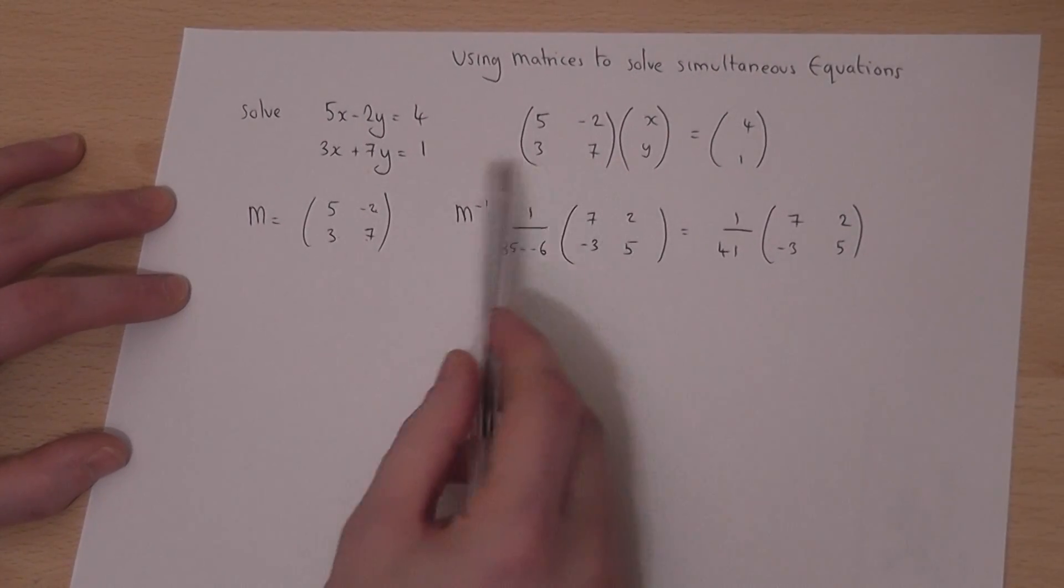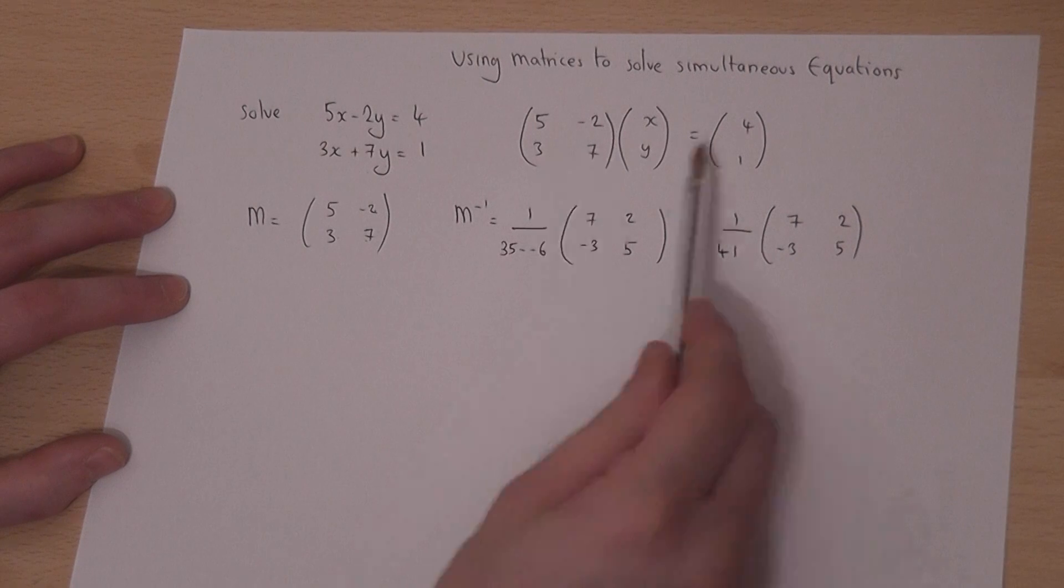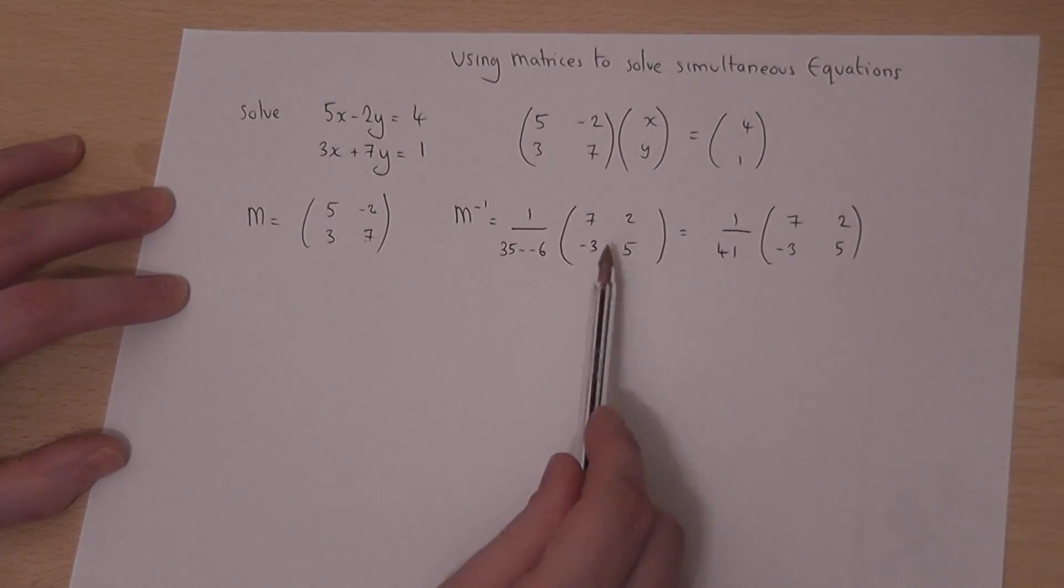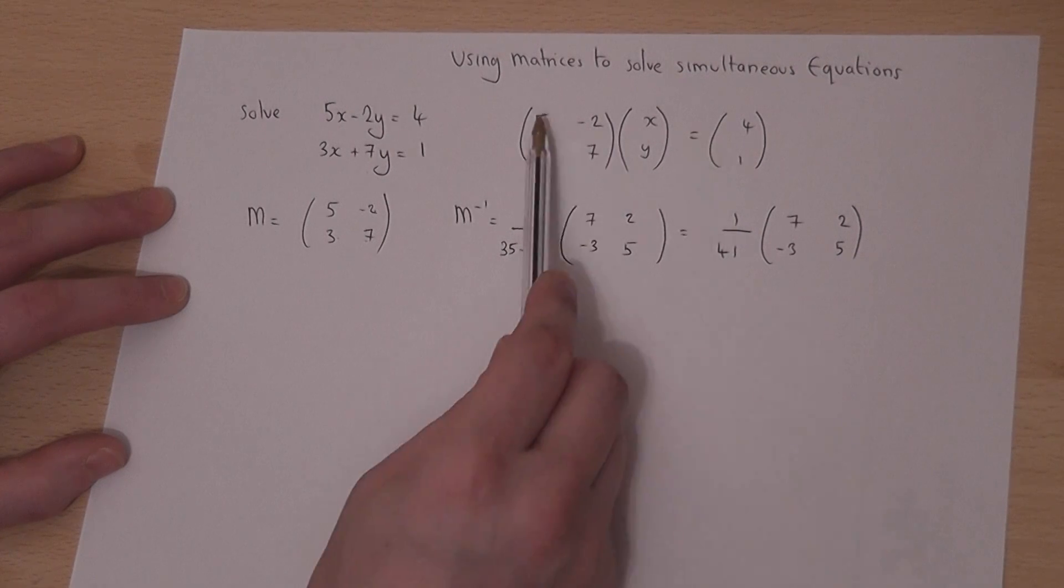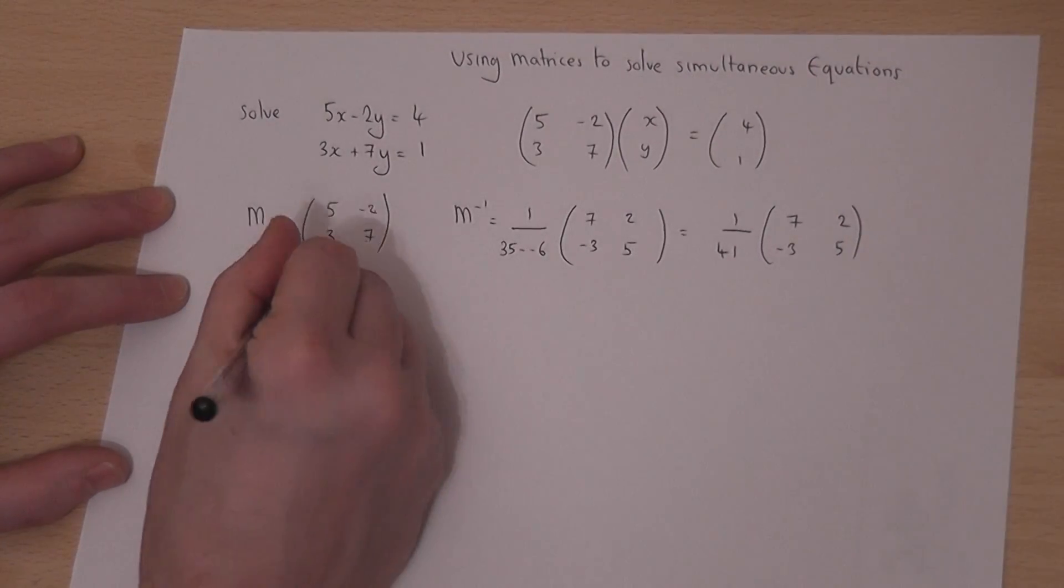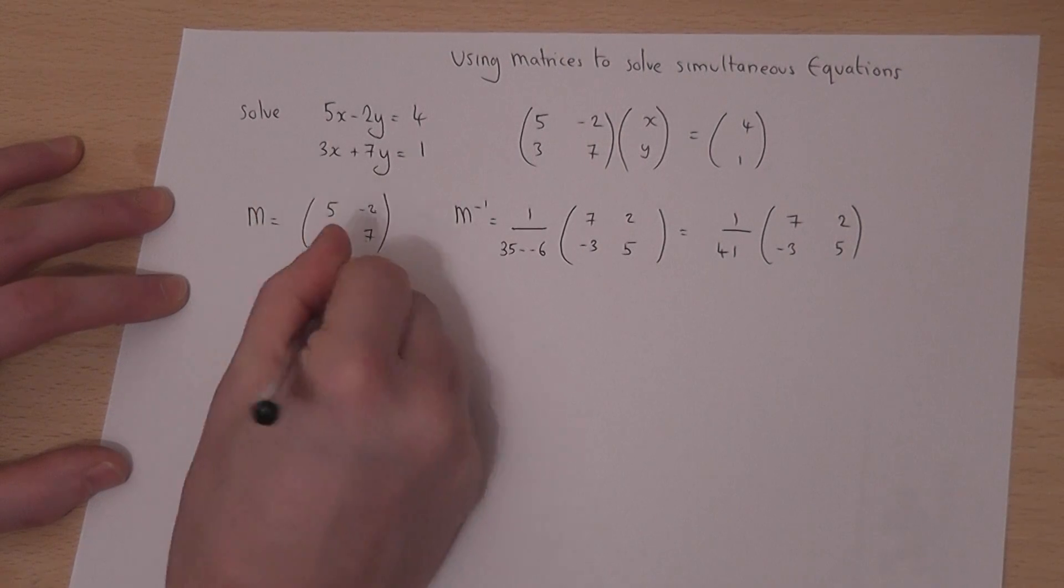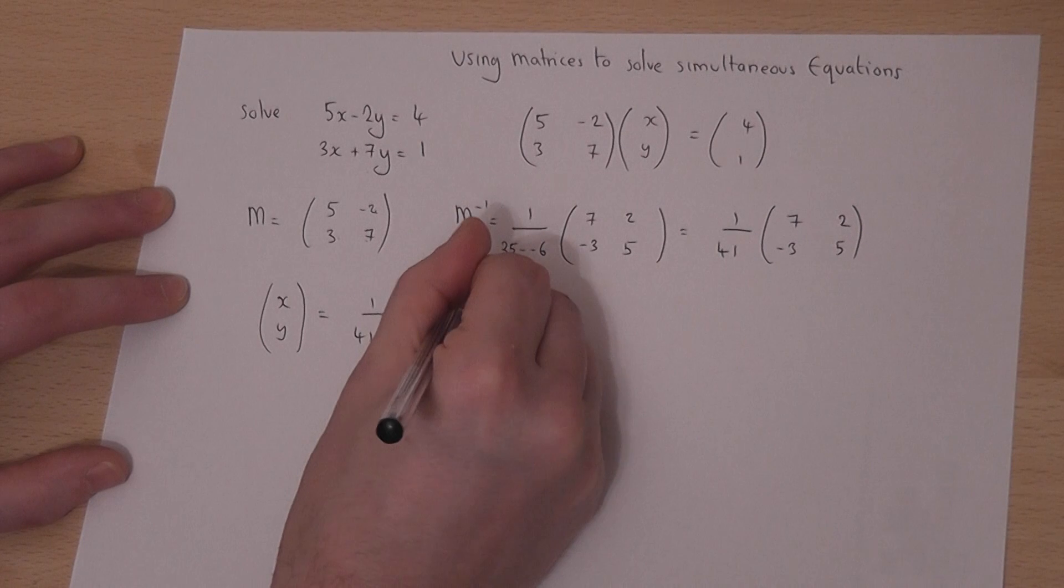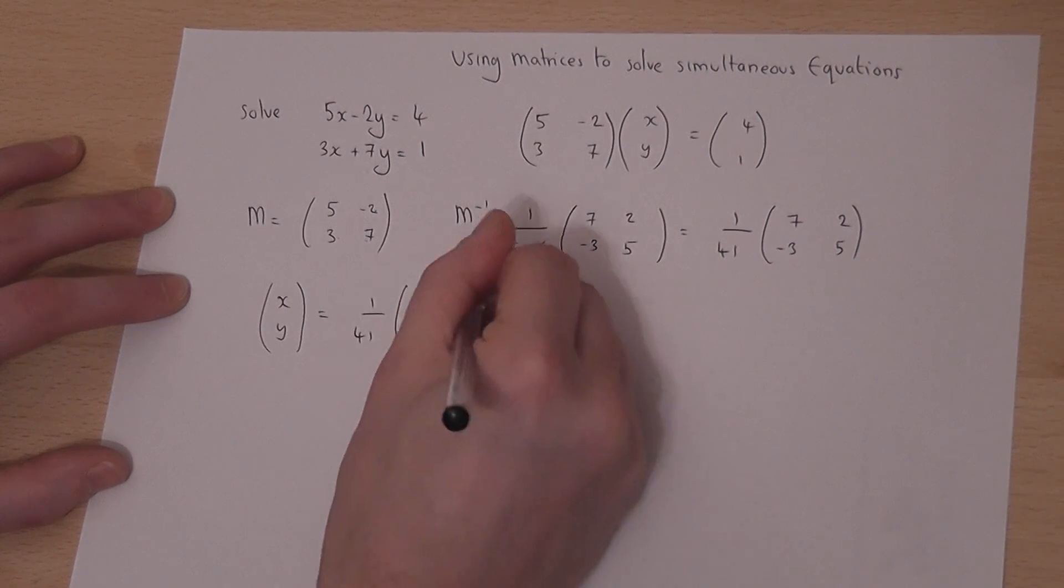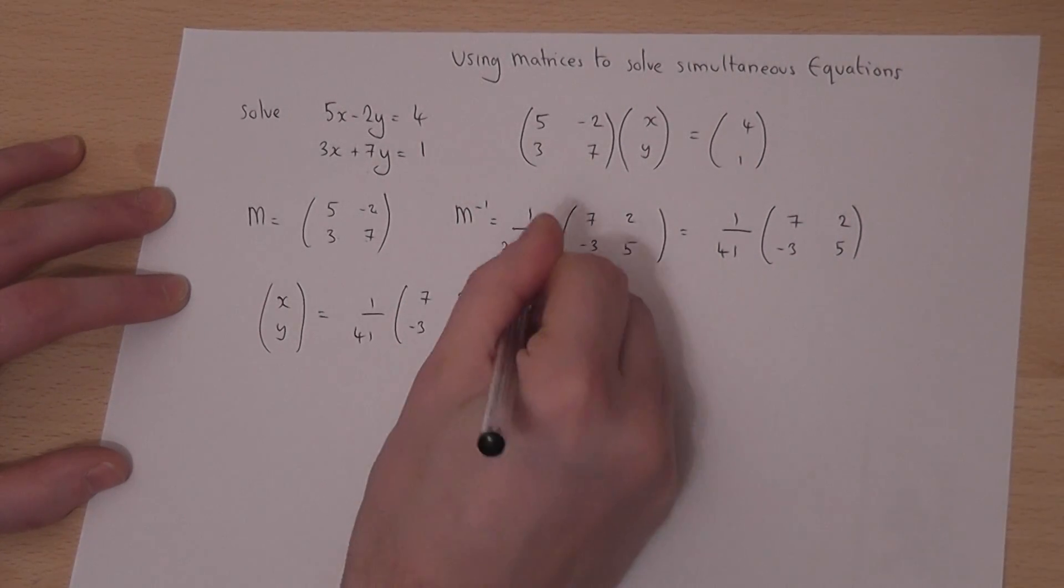To find x and y, we multiply both sides of the equation by the inverse. If we multiply by M inverse, then this matrix here will cancel out. So we're left with xy equal to the inverse times 4, 1.